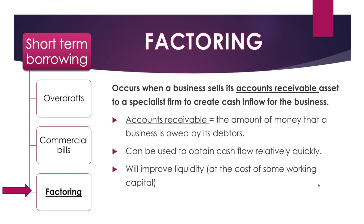The final short-term borrowing option is factoring, which involves introducing a third party into paying debts back. It is when a business sells its accounts receivable asset to a specialist firm to create cash inflow. Accounts receivable is an asset — the amount of money that the business is owed by other companies who haven't paid yet. Businesses typically have this relationship with suppliers, where payment is deferred for 30 or 60 days before settling in one hit.